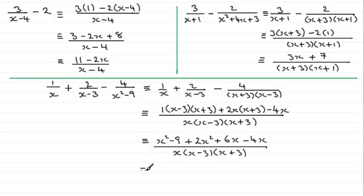And, cleaning the top up here, we've got x squared and 2x squared, which is 3x squared. We've got, for the x term, 6x minus 4x, which is plus 2x. And, then we're left with the constant minus 9. And, that's all divided, then, by x times x minus 3 times x plus 3.